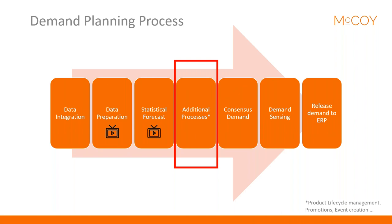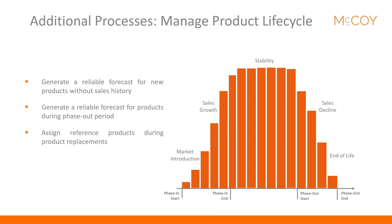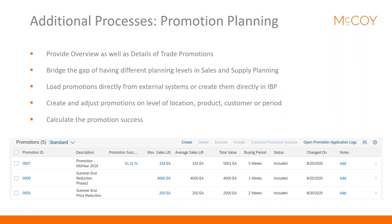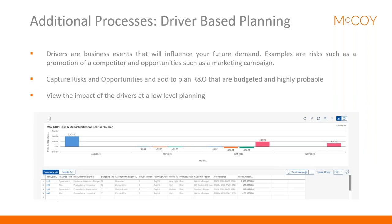You can also run additional processes. The first is product life cycle management — phase in and phase out — generating reliable forecasts for new products by assigning reference products during product replacement. Another process is promotion planning: you can load promotions from external systems or create them in IBP, adjust them at any level, and calculate promotion success afterwards. You can also do driver-based planning, where drivers are business events influencing future demand — such as risks like a competitor or opportunities like a marketing campaign — and view their impact at any level.